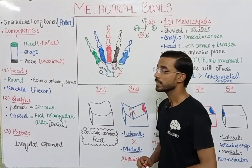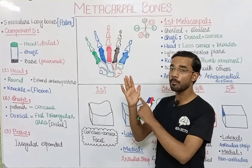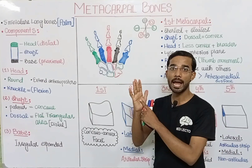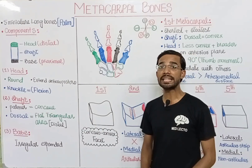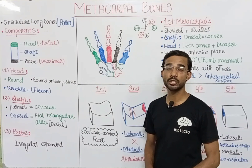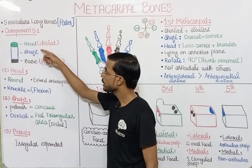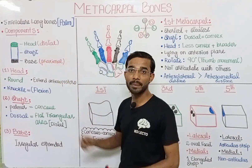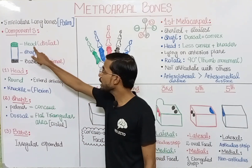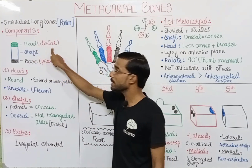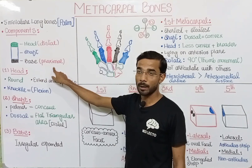There are five metacarpal bones present in the palm of our hand. We divide each metacarpal bone into three components: the head region, shaft region, and the base region. The head will always be at the distal point and the base will be at the proximal point.